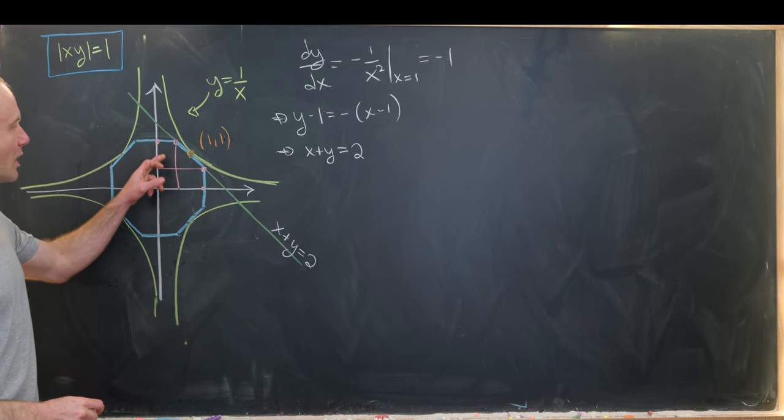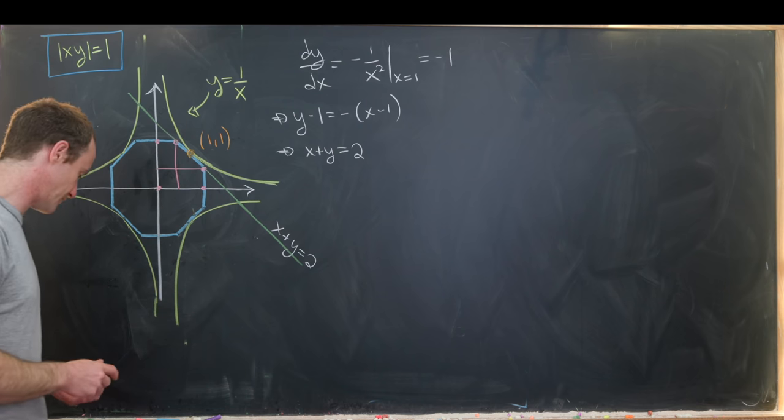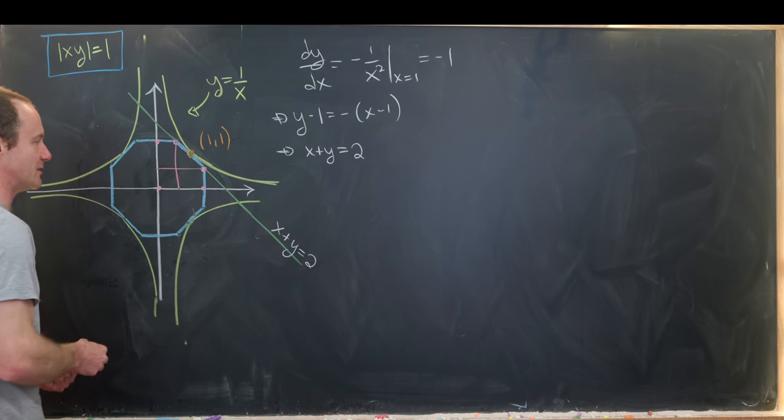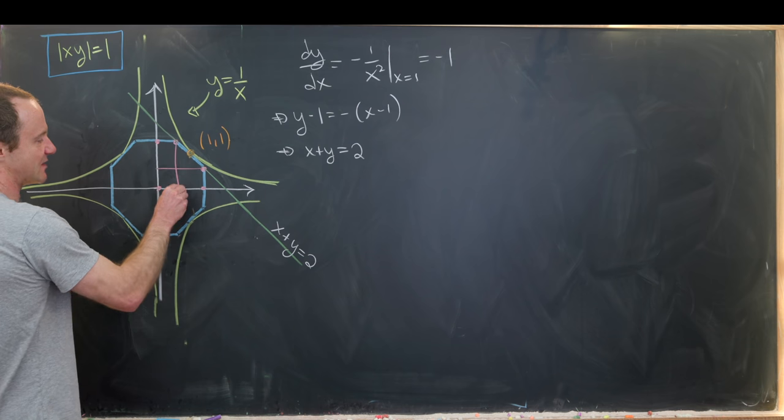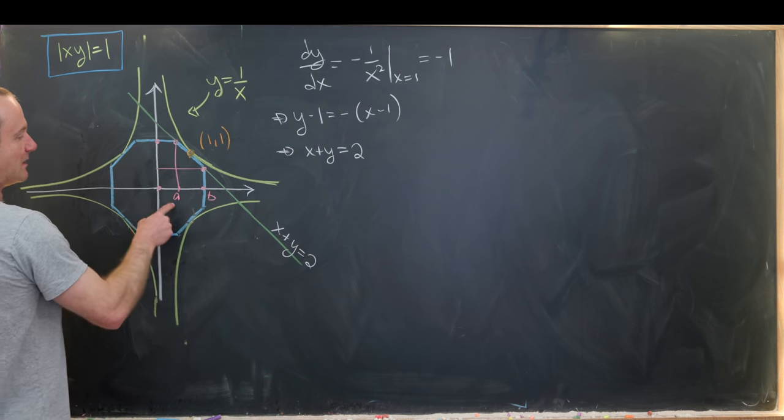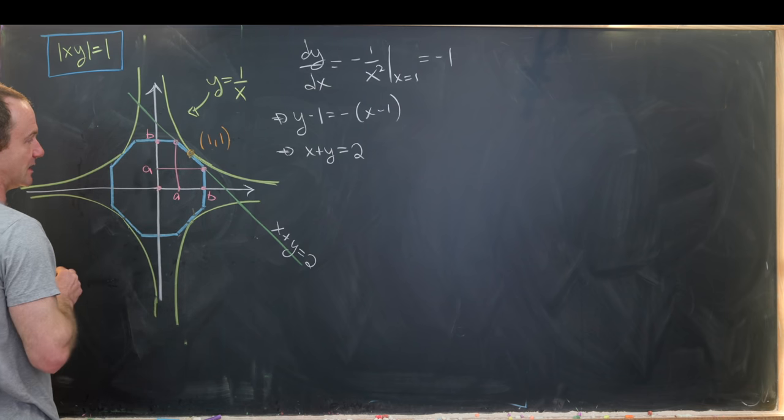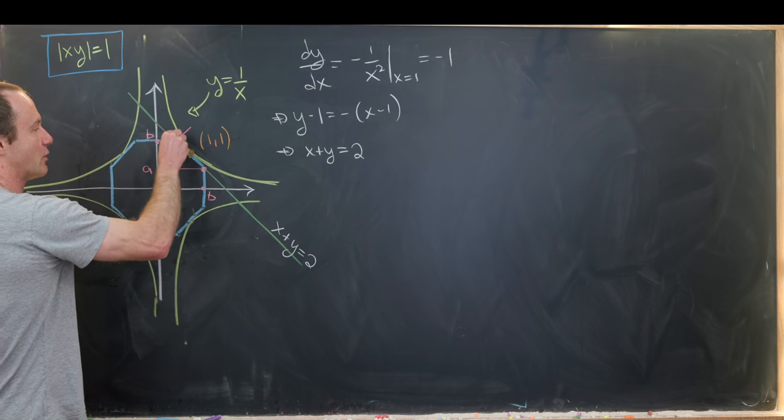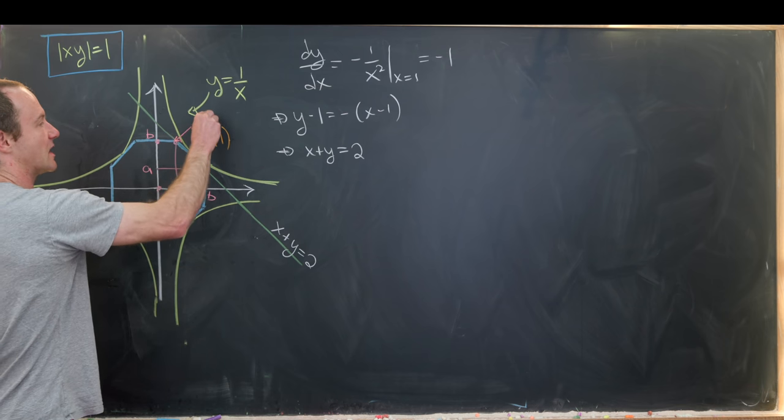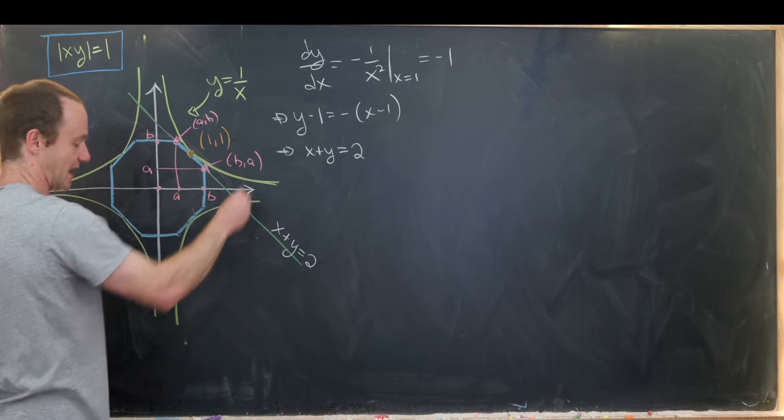Next up we need to impose some conditions on these points right here in pink. So I'll give them names maybe. So let's say that this is coordinate a, this is coordinate b, and then by symmetry up here on the y-axis will be a and this will be b. That makes this point right here equal to a comma b and that makes this point right here equal to b comma a.